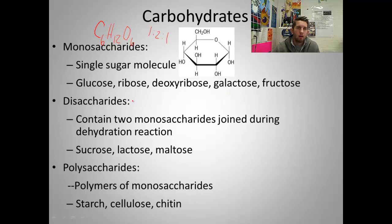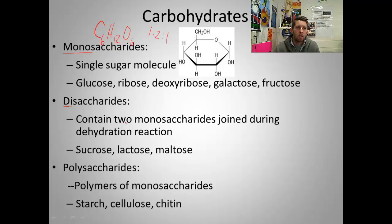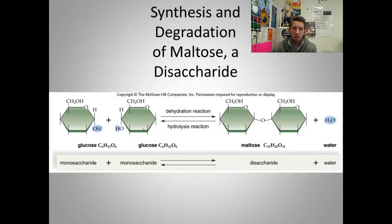Another type is a disaccharide. The third type is polysaccharide. The prefixes tell us a lot — mono meaning one, this is one simple molecule. Put a couple of monosaccharides together, you get a disaccharide, joined by a dehydration reaction. Why is it called dehydration? Because when you put monosaccharides together, you lose water.